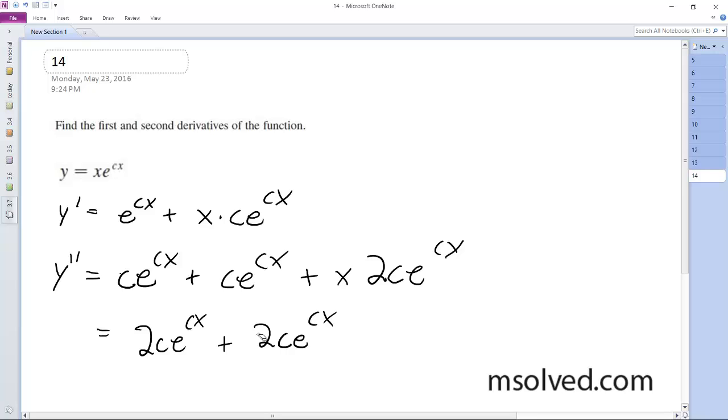Oops, I made a mistake - it should be cx. Factoring out the e^(cx), we get e^(cx) times the quantity 2 plus cx, and that's it.